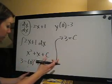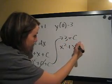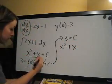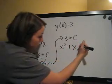So then all you have to do is write your final answer, which is x squared plus x, which I'm getting from here, before we plugged in the zeros, and then plus c, which we solved for as 3.